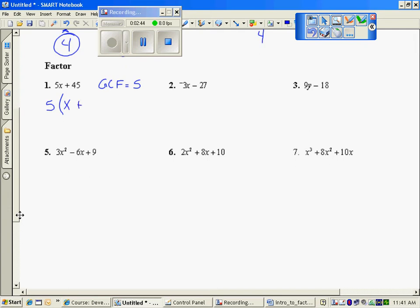that would be x. 5 times what number is 45? That would be 9. To check myself, I would distribute 5 times x plus 45. So this is what it looks like factored. So factored is this undistribute idea.